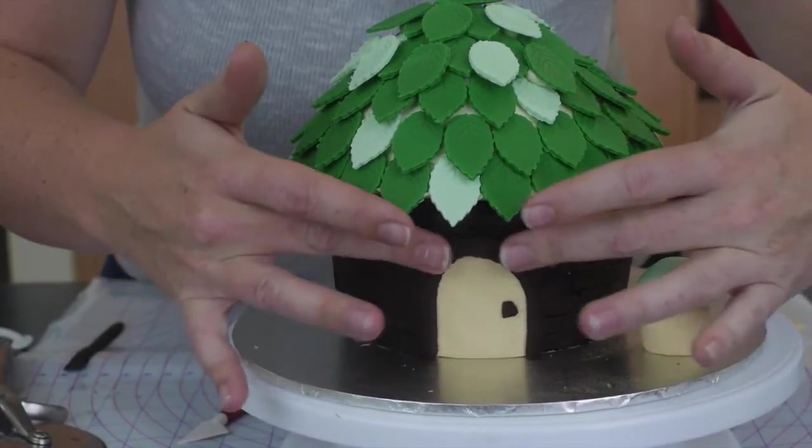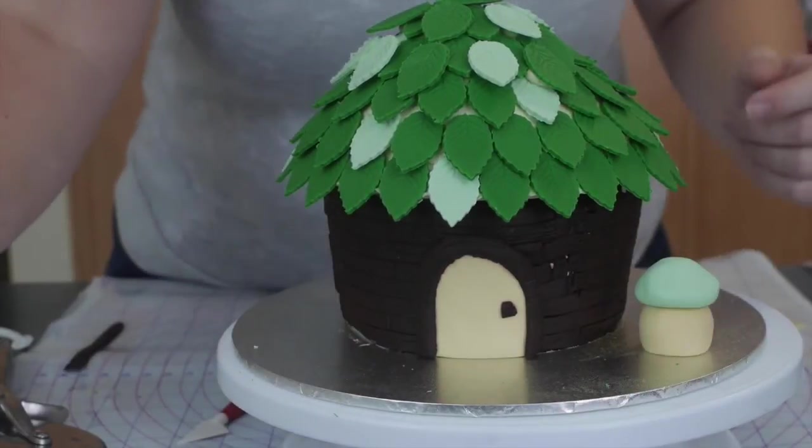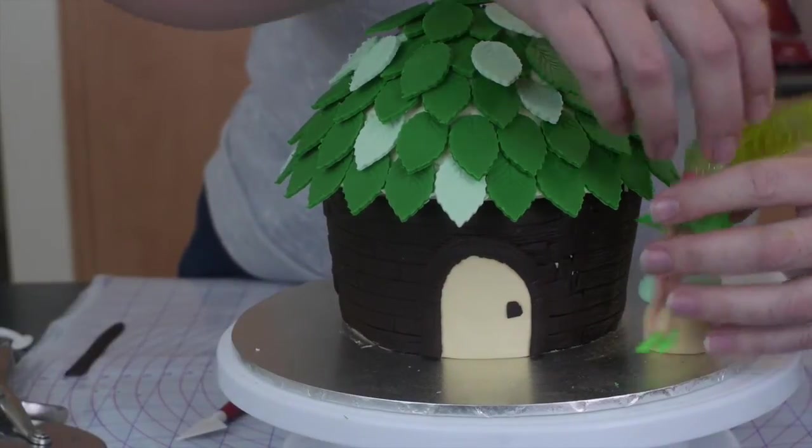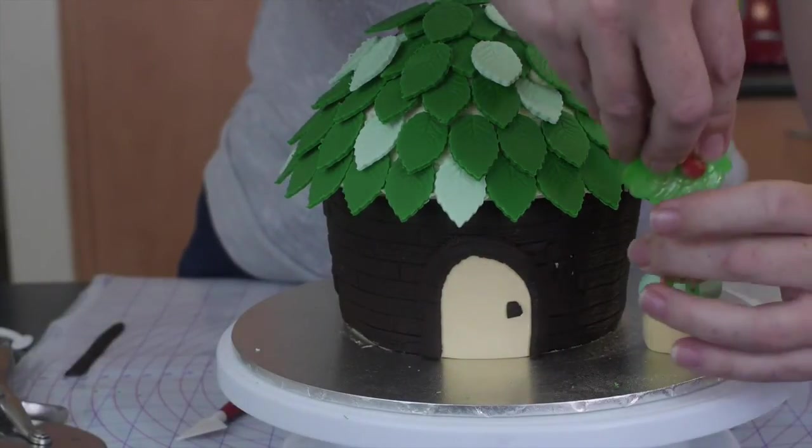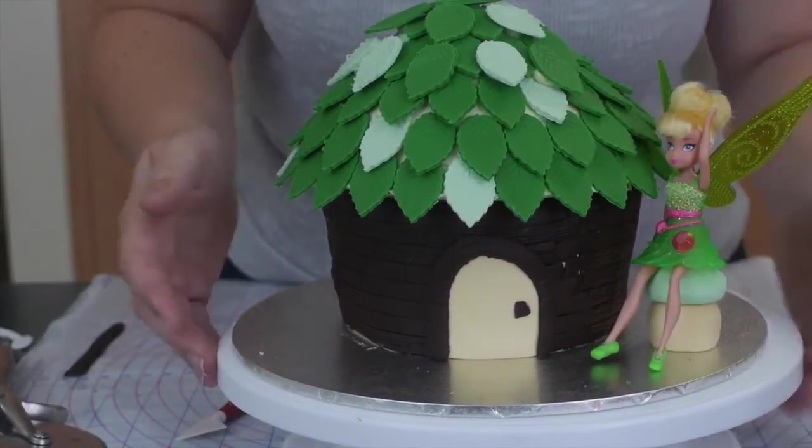Now the absolute last thing we have to do, I know I said the door was the last thing to do, but I remember there's another thing to do, is put Tinkerbell in her house. Because that just makes sense. Of course Tinkerbell needs to be in her house. We just made it for her and she's going to be thrilled with her house. So let's put her down on that toadstool that we made for her earlier.